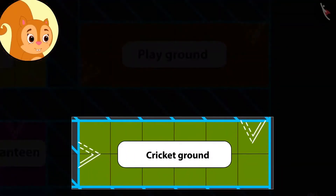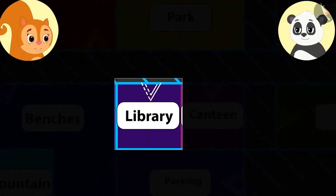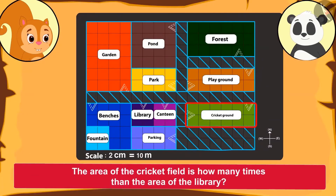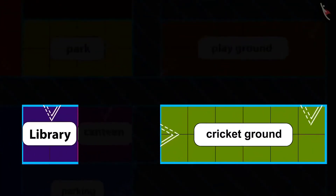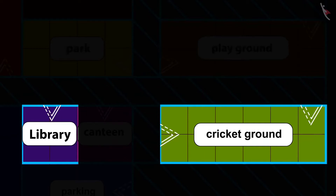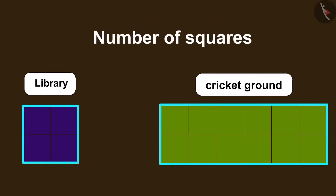Chanda was surprised to see the cricket ground on the map. She told Golu how the library looked much smaller than the cricket ground, and asked him how many times the area of the cricket ground is compared to that of the library. Kids, do you remember the process of finding the area of any given place using the method of squares?